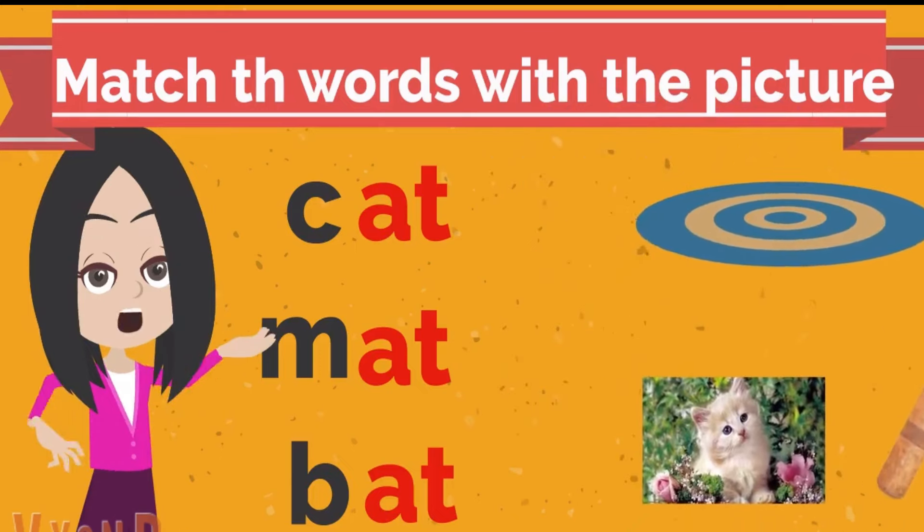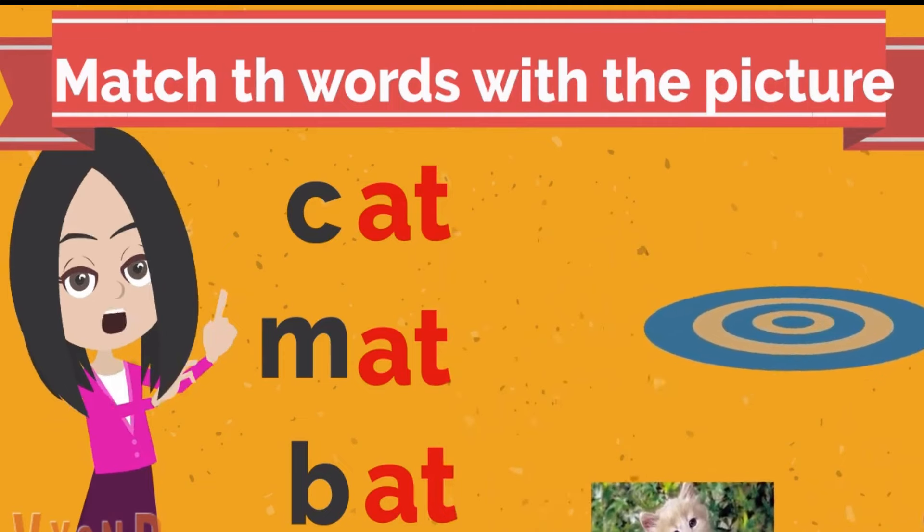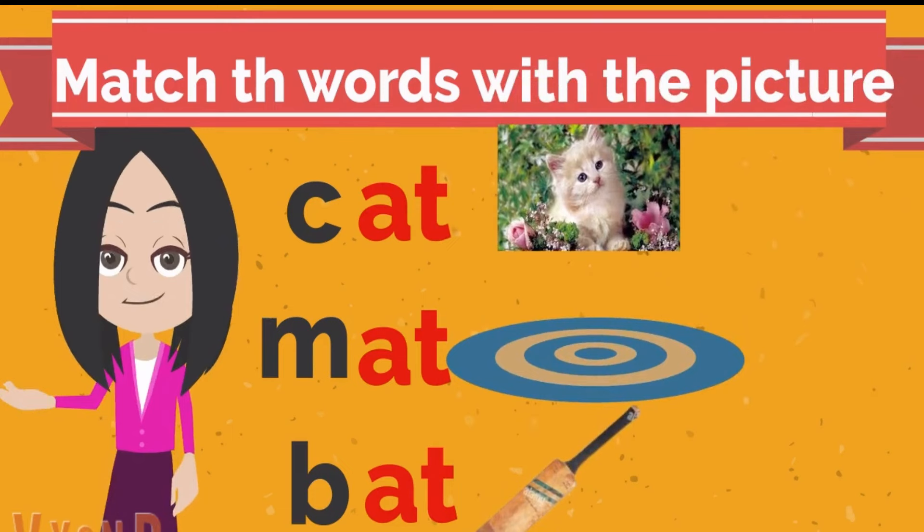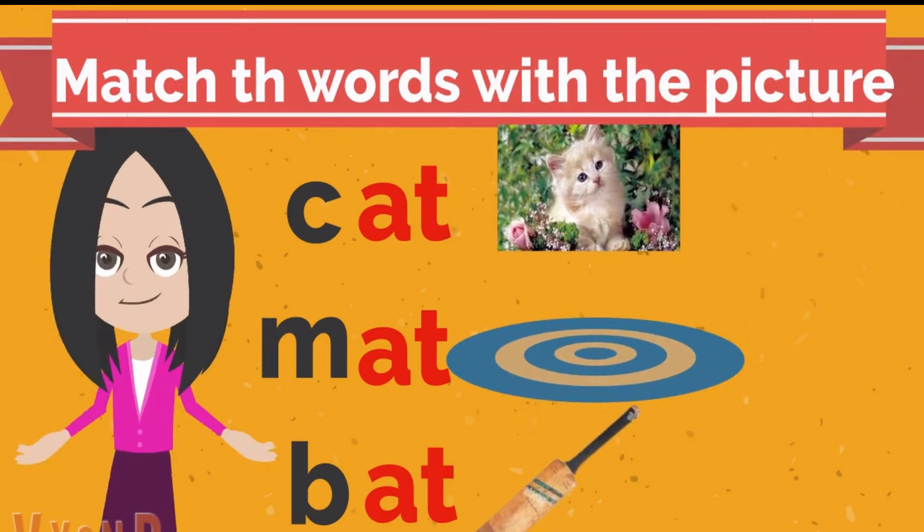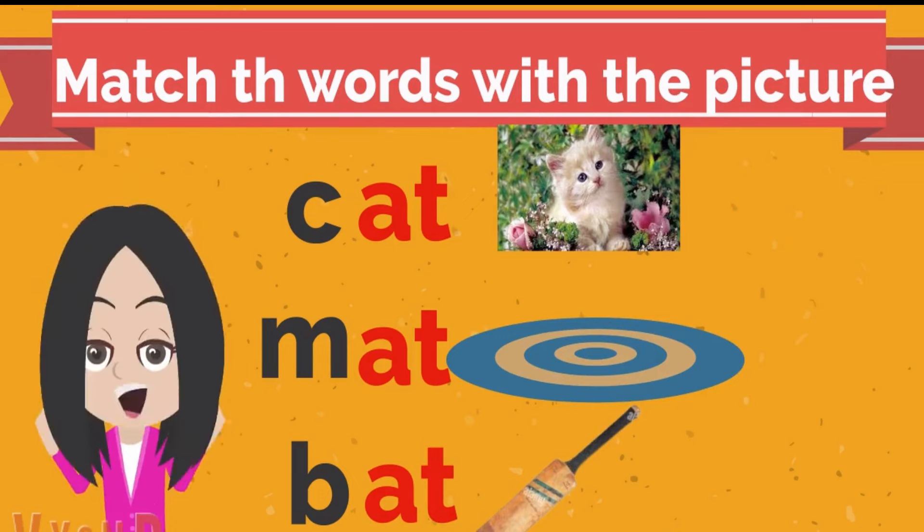Now read the words and match them with the pictures. First word is cat. Second word is mat. And third word is bat. Yes, you did it.